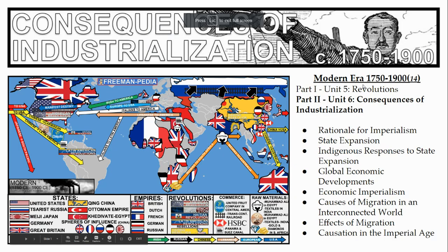Good afternoon. This is the last of the content reviews for your AP test. This is technically Unit 6 because the AP exam this year is going to be on units 1 through 6, which is year 1200 to 1900, the end of Unit 6. Unit 6 is the second part of what's considered the modern era of world history, and the modern era is 1750 to 1900.